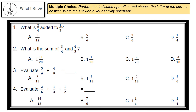Number 2: What is the sum of 3/4 and 4/5? A. 1 11/20, B. 1 11/20, C. 1 2/20, or D. 3/10.